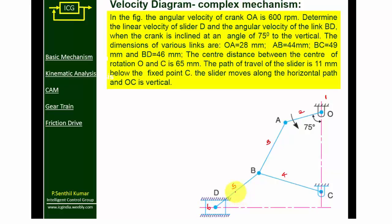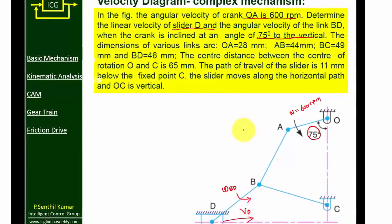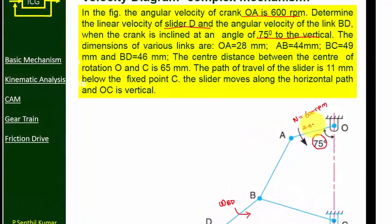In the given figure, the angular velocity of crank OA is 600 RPM. We need to find out the linear velocity of slider D, and the angular velocity of link BD — omega BD — when the crank is inclined at an angle of 75 degrees to the vertical line.